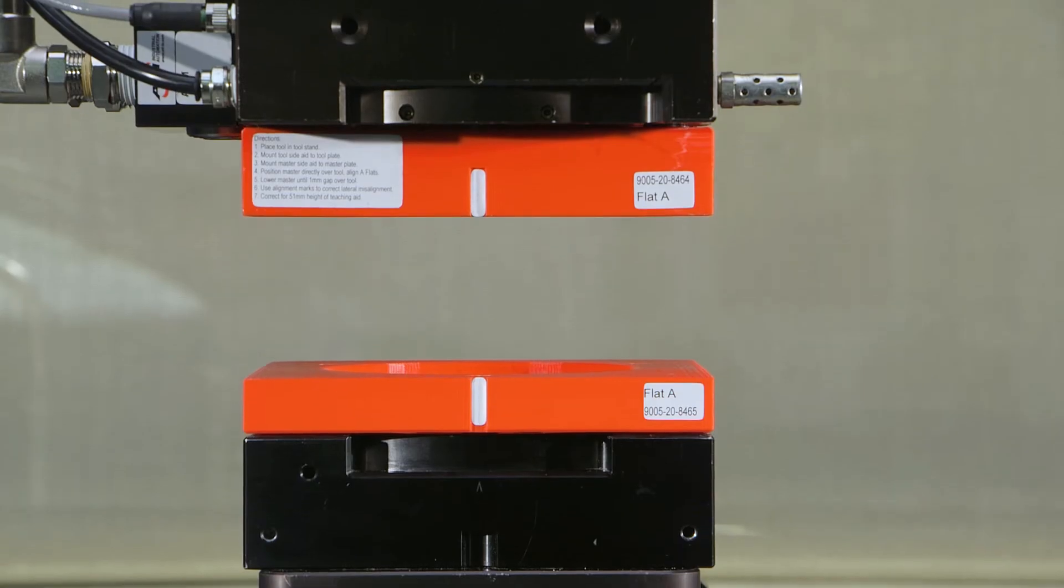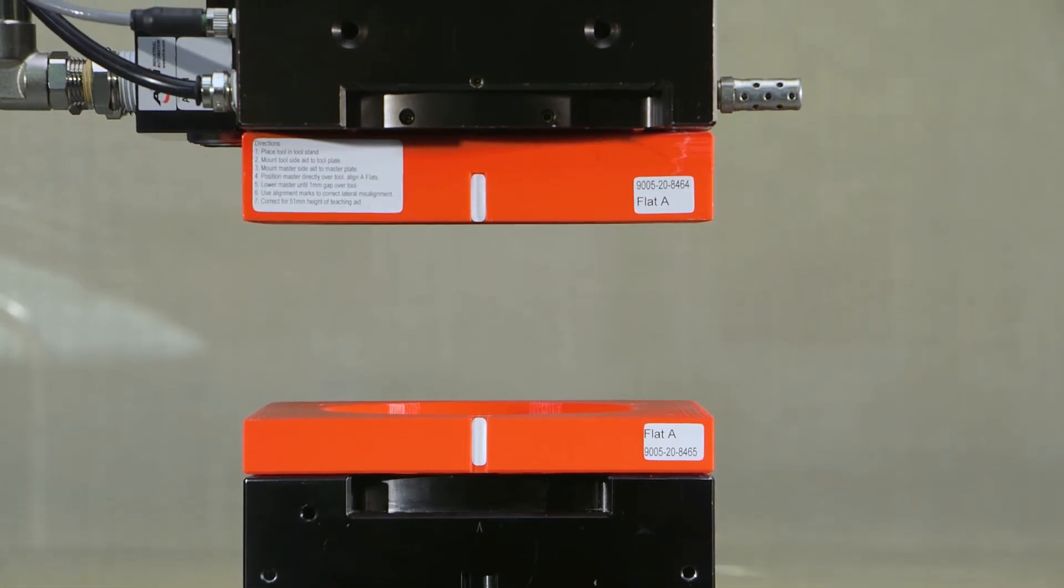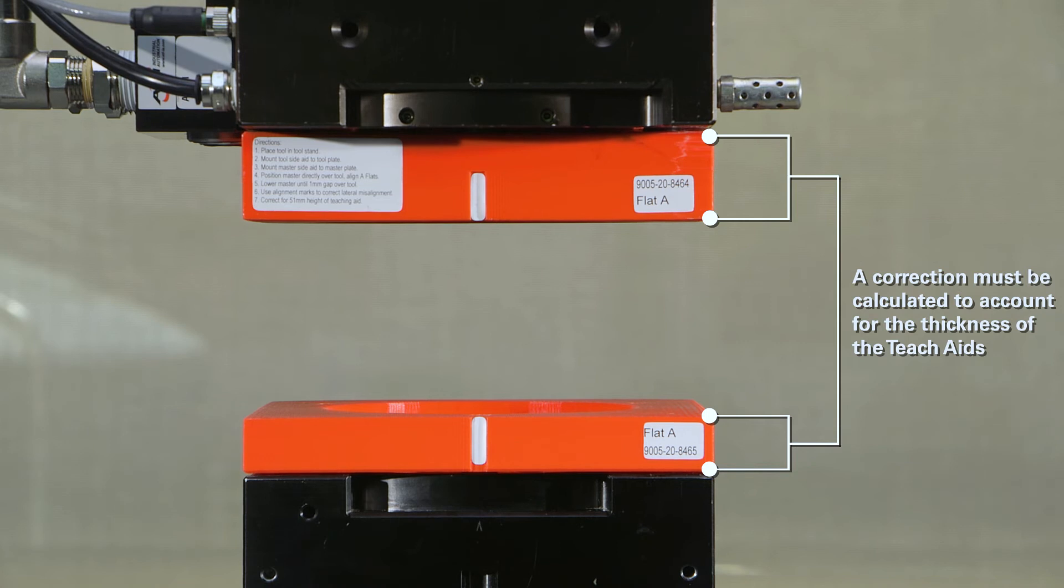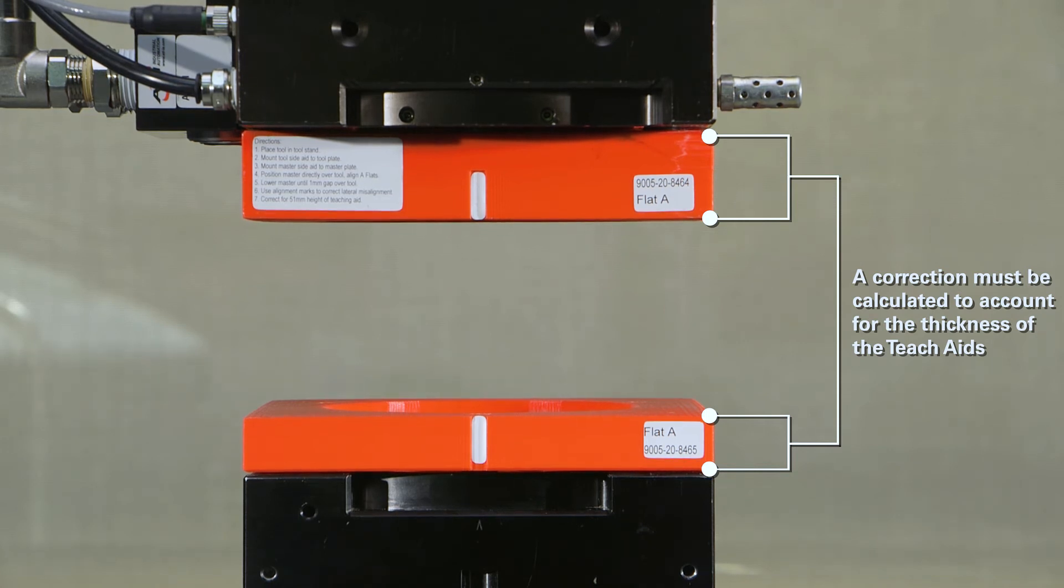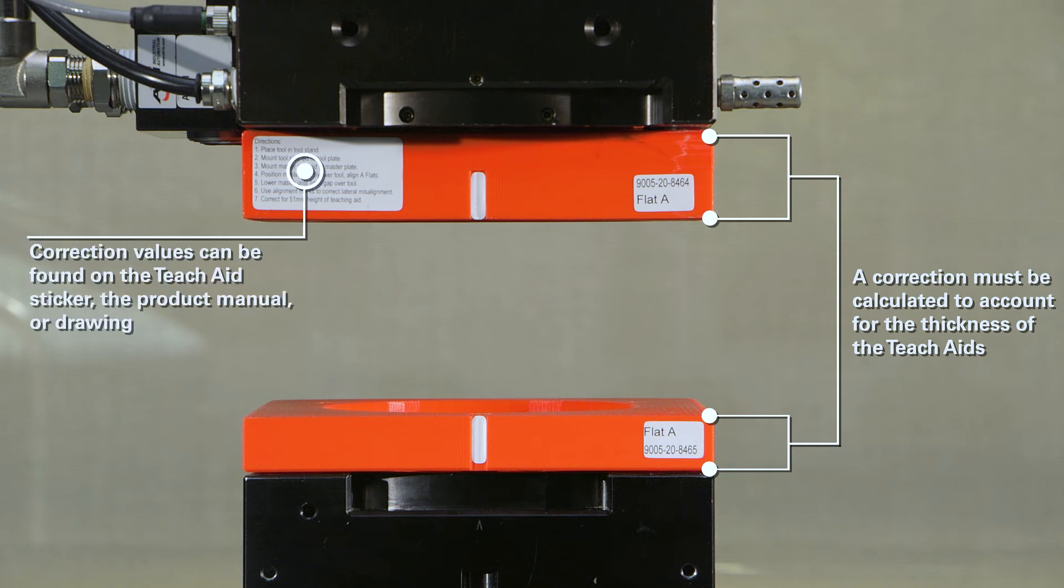Move the master T-Jade away from the tool T-Jade. To account for the thickness of the tool and master side teaching aids, a correction must be calculated so that the pickup and replacement coordinates are correct. Refer to the sticker on your T-Jade, the product manual, or drawing for the applicable value to calculate the correction.